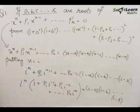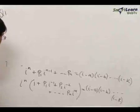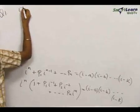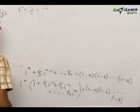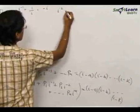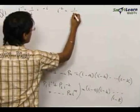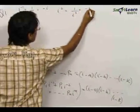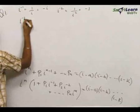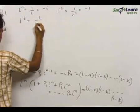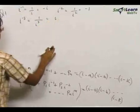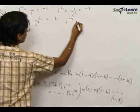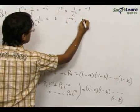Now we know that: i^(−1) = 1/i = −i; i^(−2) = 1/i² = −1; i^(−3) = 1/i³ = i; and i^(−4) = 1.